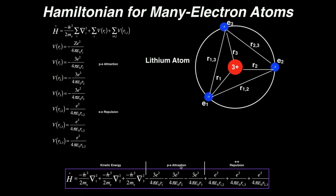Now let's add on the attractive potential energy terms. They're all negative, so we have minus 3e squared over 4 pi epsilon zero r1, minus 3e squared over 4 pi epsilon zero r2, and minus 3e squared over 4 pi epsilon zero r3.